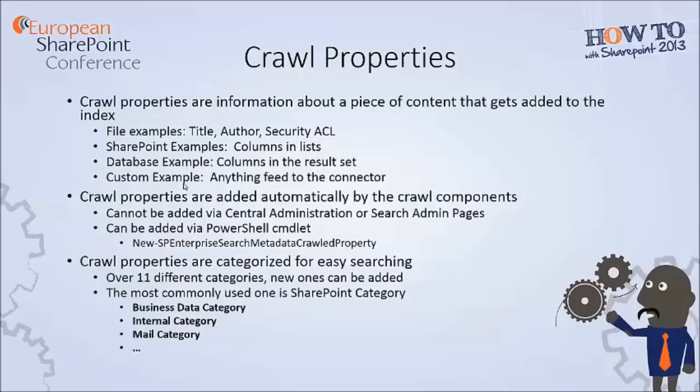Crawled properties are metadata such as author, title, subject that are extracted from the document during crawls. Crawled properties could actually be defined as columns that are indexed and propagated to crawled properties. They cannot be created in the search service application or search settings pages, but you can add your custom crawled properties via the object model. For example, if the indexed column was from a BCS connection, then this crawled property would be in the business data category.